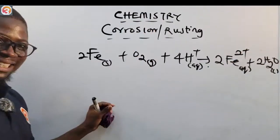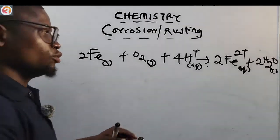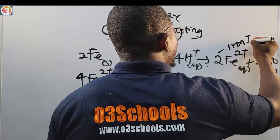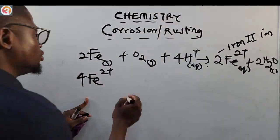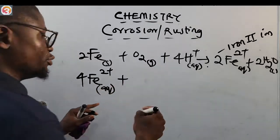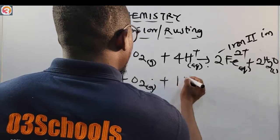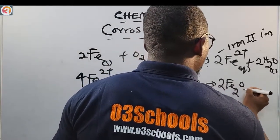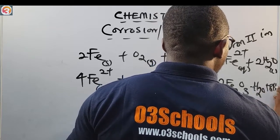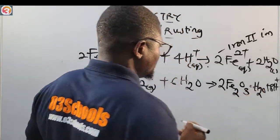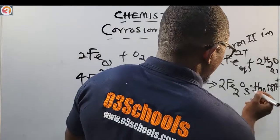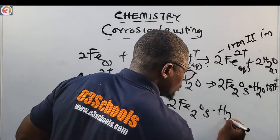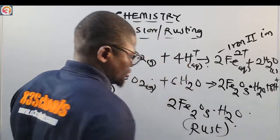The iron(II) ions then react further with oxygen and 6 molecules of water to give 2 Fe2O3·H2O plus hydrogen ions. This Fe2O3·H2O is what we call rust. So iron first forms Fe²⁺ ions, and those ions react again with oxygen and water to give us this iron(III) oxide hydrate. Fe2O3 is iron(III) oxide — please take note of that. And this hydrated form of iron(III) oxide is called rust.